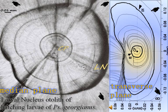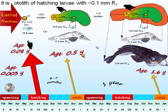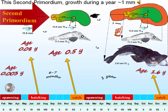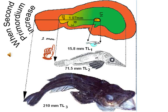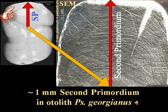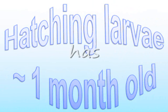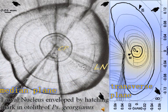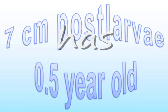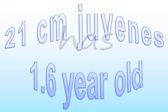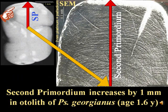From the internal otolith morphology we can find the larval nucleus. This is the otolith of hatching larvae with 0.1 mm of radius. We can find the second primordium — this is the mark of the post-larval otolith. This second primordium grows during the year about 1 mm. When the second primordium increases by 1 mm, that fish has aged one year more. The larval nucleus is enveloped by a hatching mark.